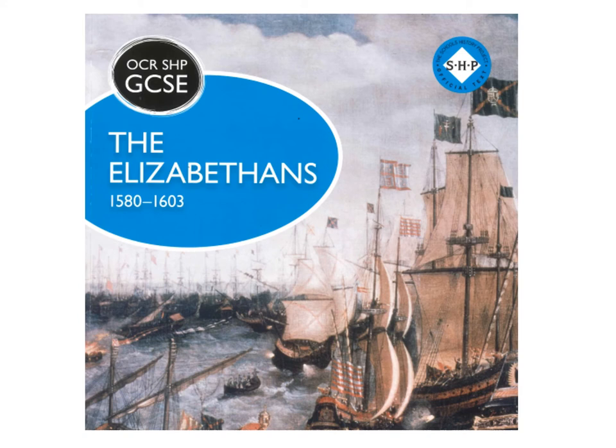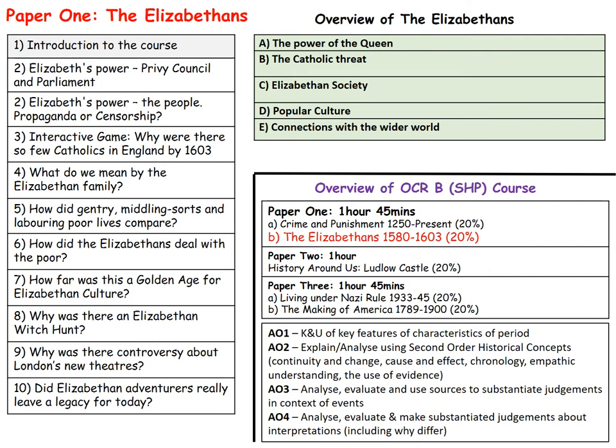Welcome to this narrated PowerPoint on the Elizabethans. The Elizabethans makes up 20% of the total course. It is the second half of paper one, and paper one is 1 hour 45 minutes. The first part of paper one is crime and punishment. There are five parts of the Elizabethans as you can see in that top right-hand corner.